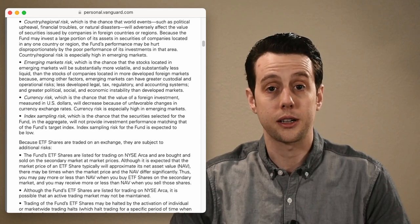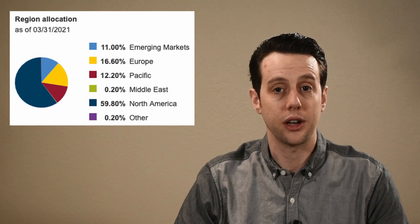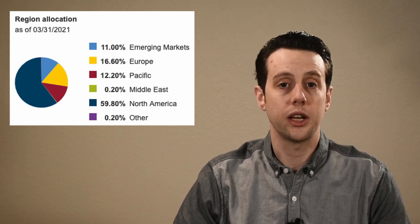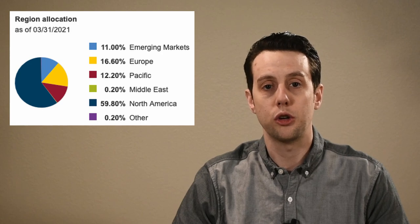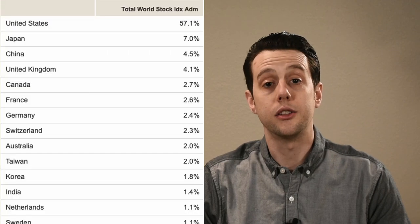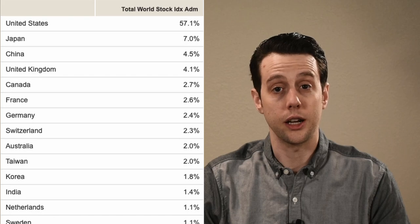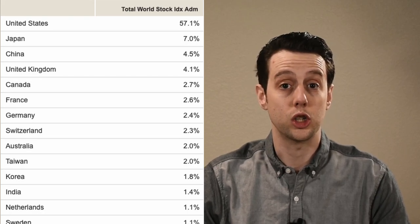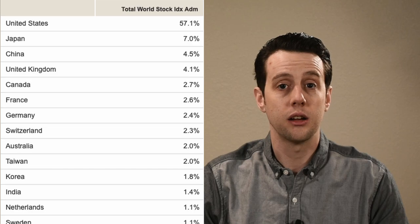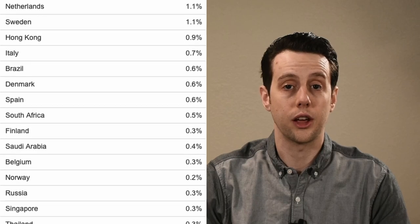Let's look at the current composition of VTWAX. The top regional allocations are 59.8% in North America, 16.6% in Europe, 12.2% Pacific, and 11% in emerging markets. In terms of countries, the top are 57.1% in the United States, 7% Japan, 4.5% China, 4.1% UK, and here's a list of all of the other countries.